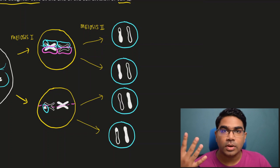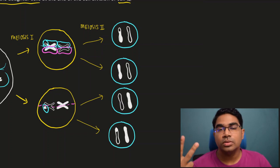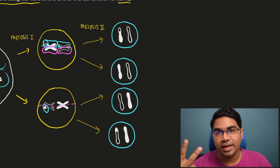These are all the possible daughter cells at the end of meiosis - four daughter cells at the end of meiosis, and two daughter cells at the end of mitosis.